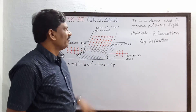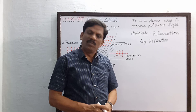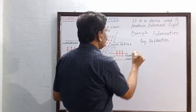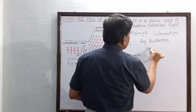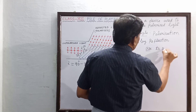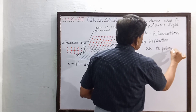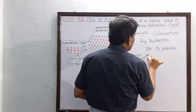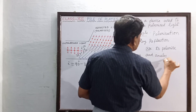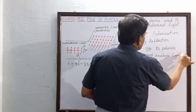Only the reflected light is completely polarized. That is why the use of the pile of plates is to polarize and also to analyze the light.